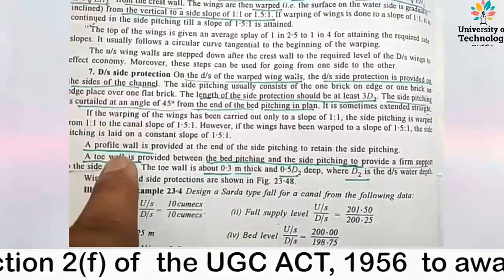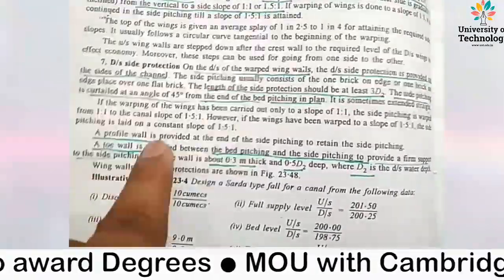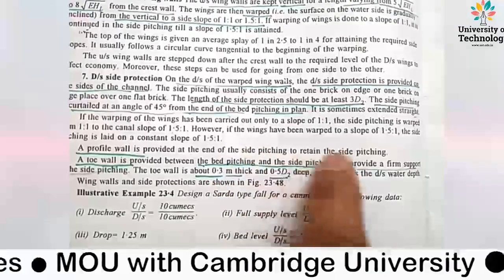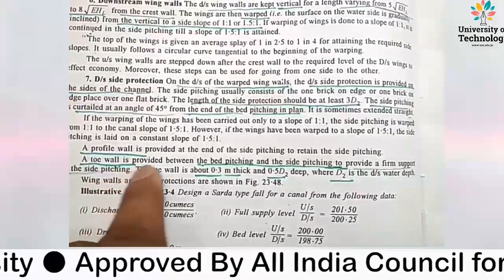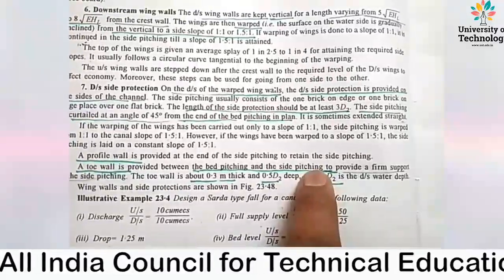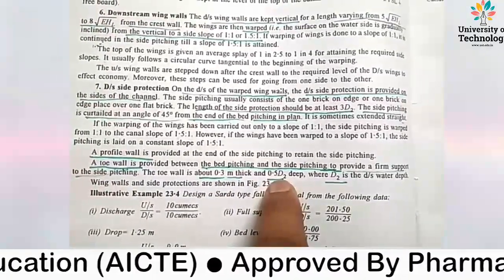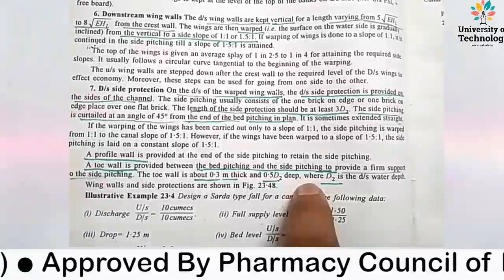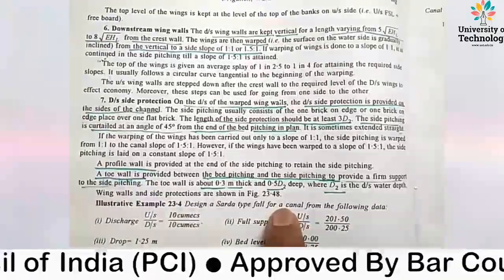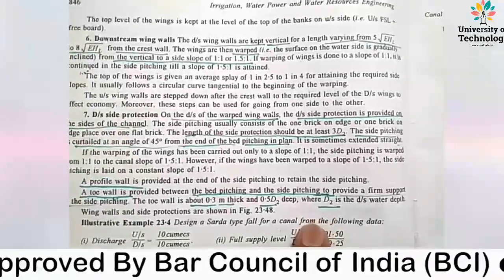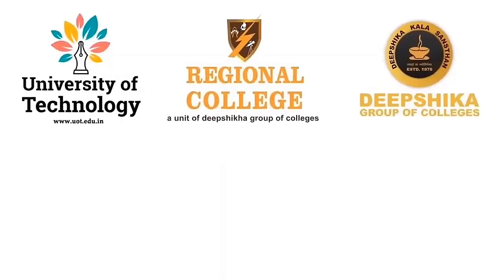A profile wall should also be provided at the end of the side pitching to retain the side pitching, acting as a protection wall. A toe wall is provided between the bed pitching and the side pitching, about 0.3 meters thick or 0.5 D2, with a depth of 0.5 D2. This covers all the design steps for the Sarda Fall. We will meet in the next lecture with a suitable example based on the Sarda Fall.